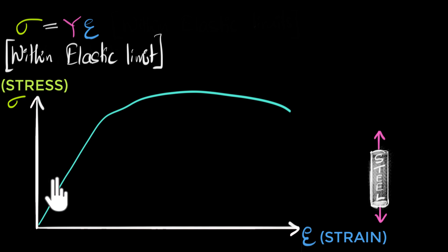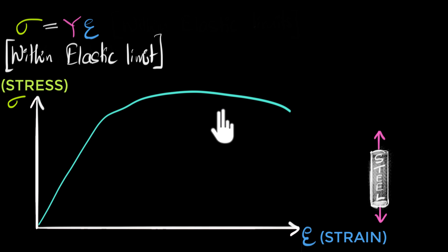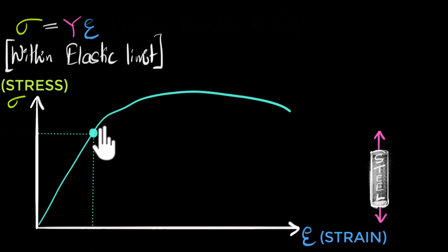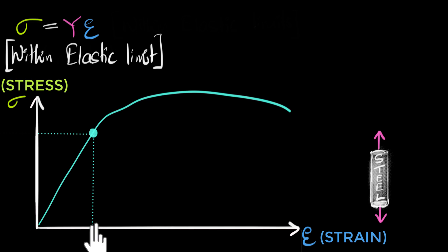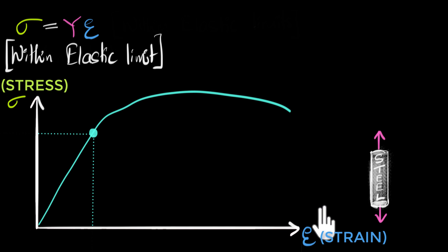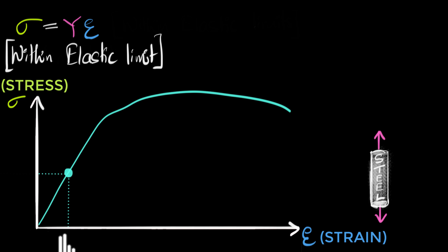Now this graph looks a little bit scary, but don't worry — we're going to explore this step by step. Whenever you see this graph and we are at any particular point, what you have to understand is this will be the amount of strain generated, and this will be the amount of stress. So for example, if we concentrate on this point, it means this much is the strain and this is the stress.